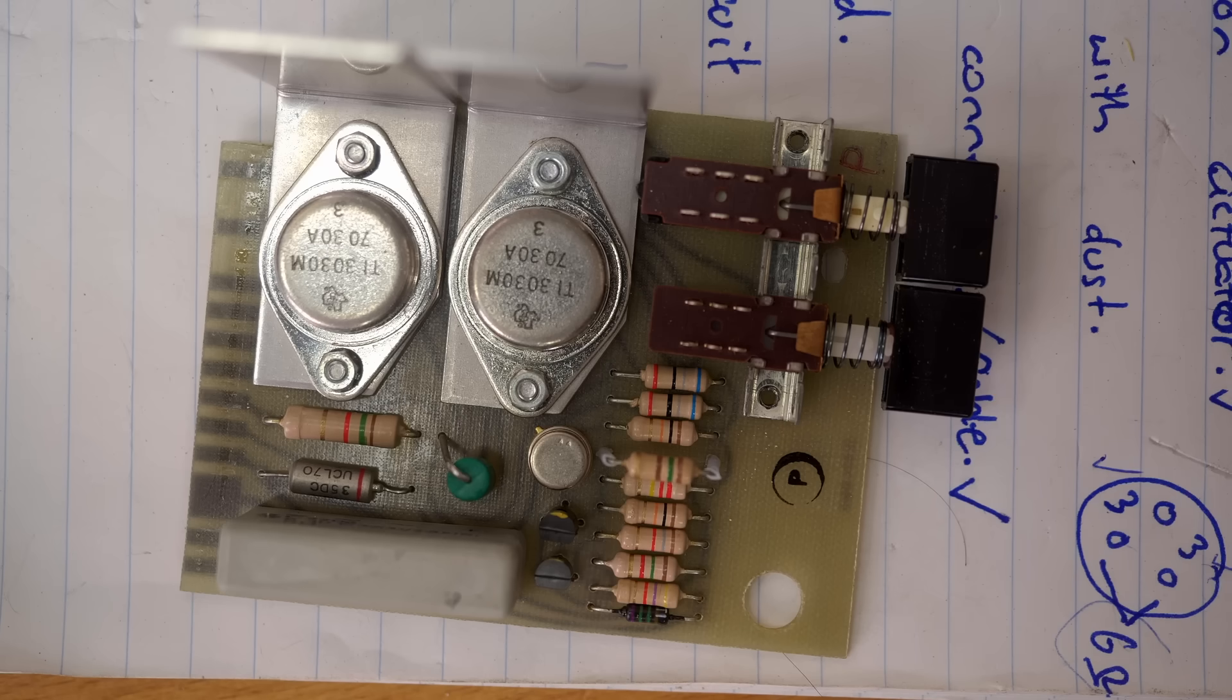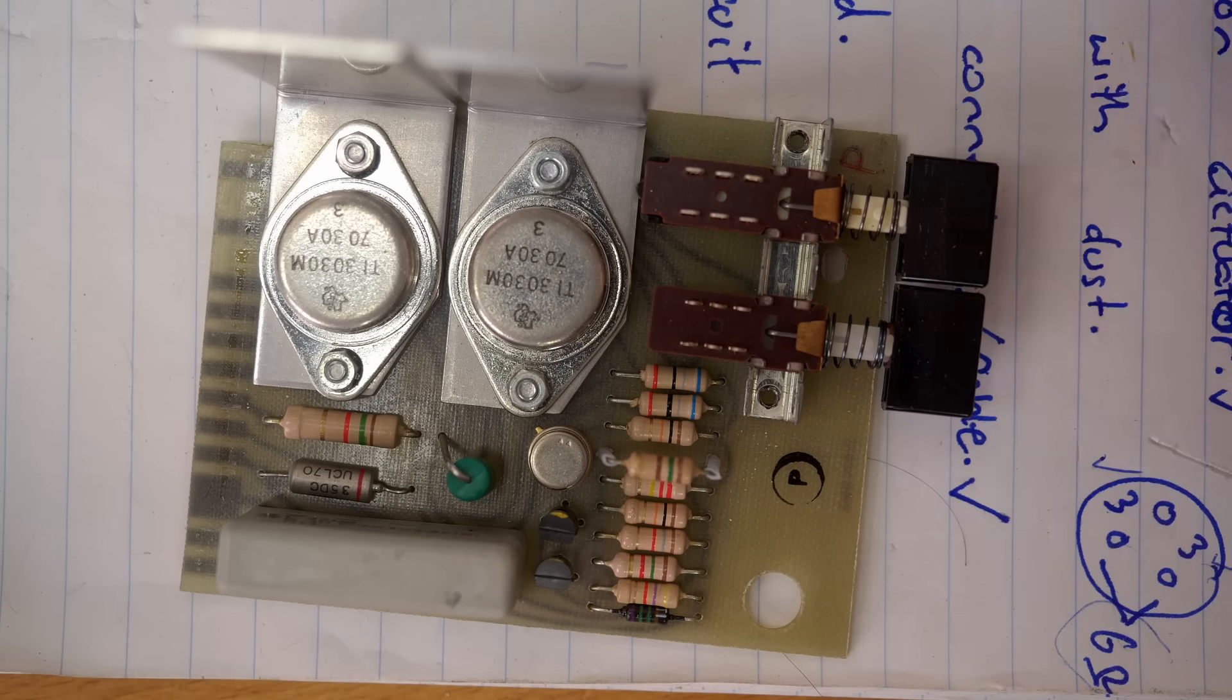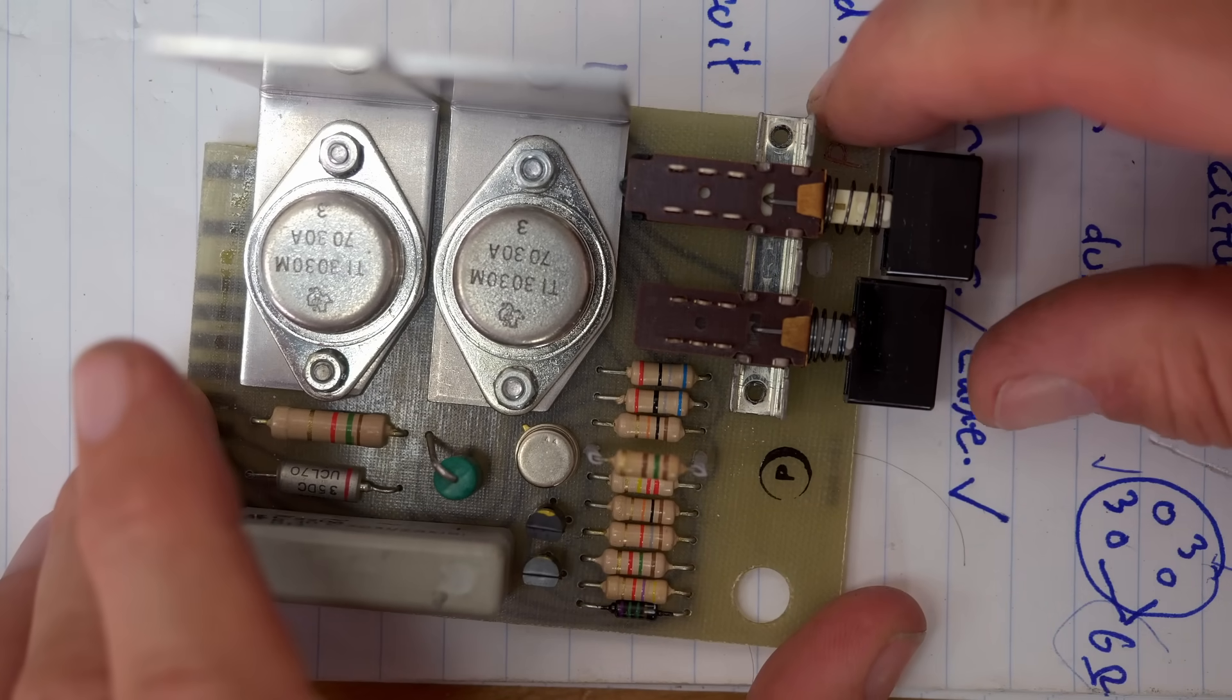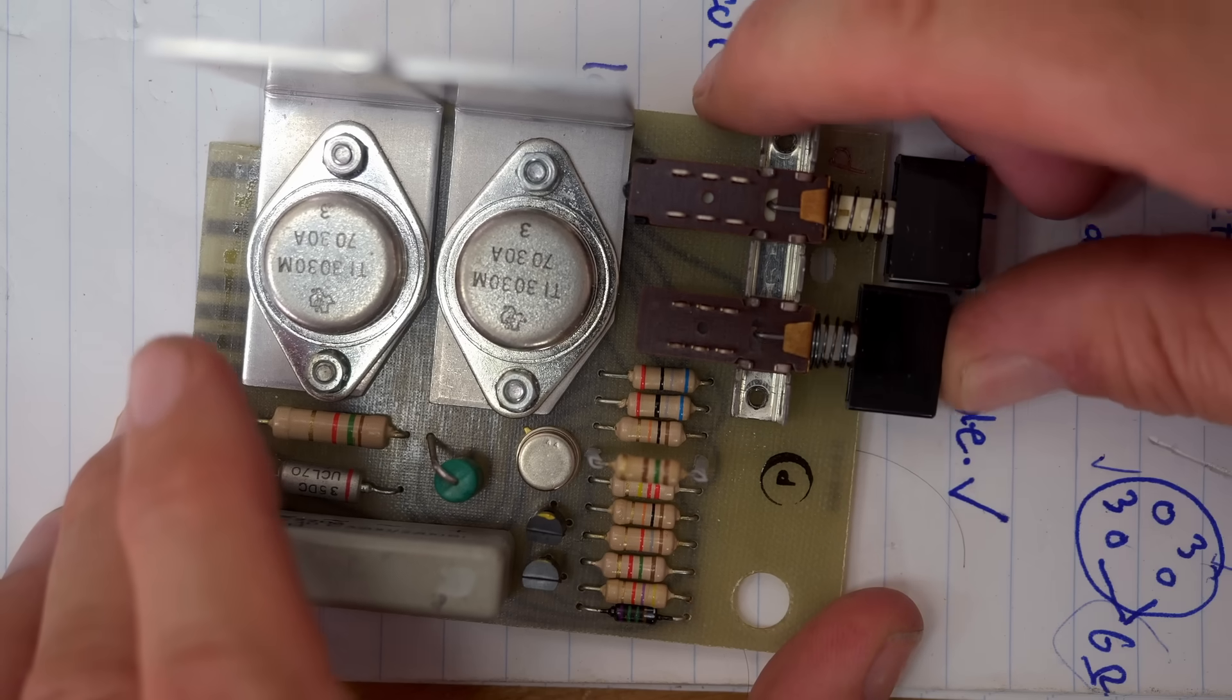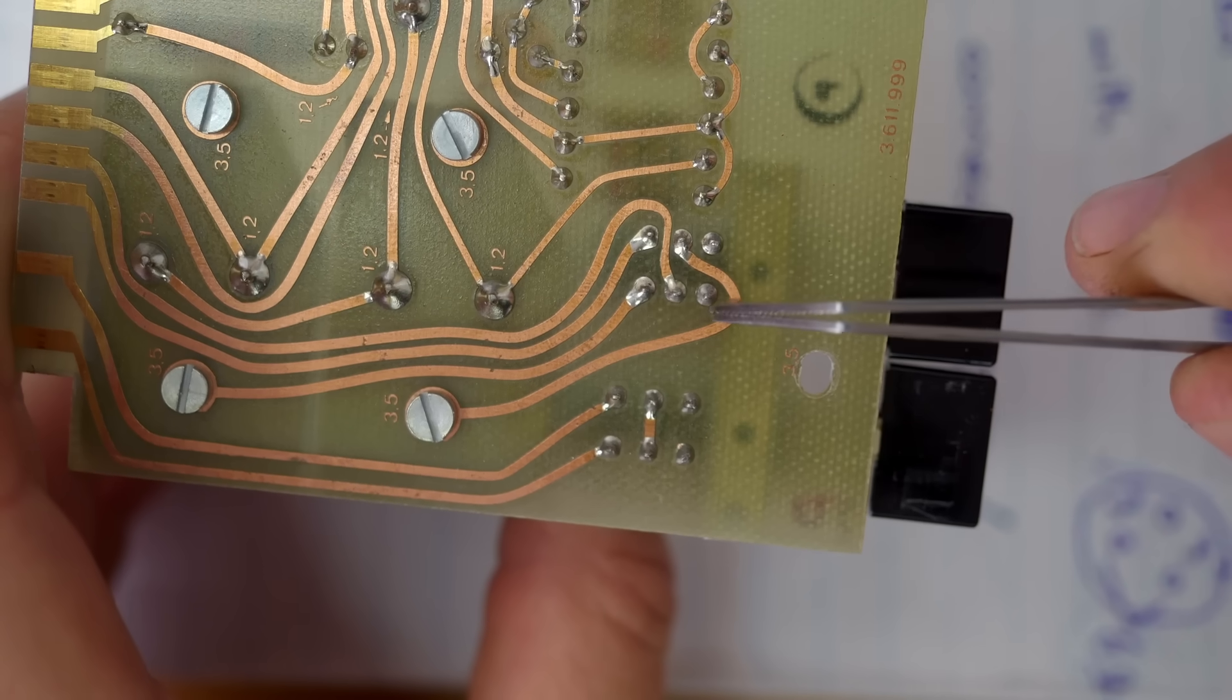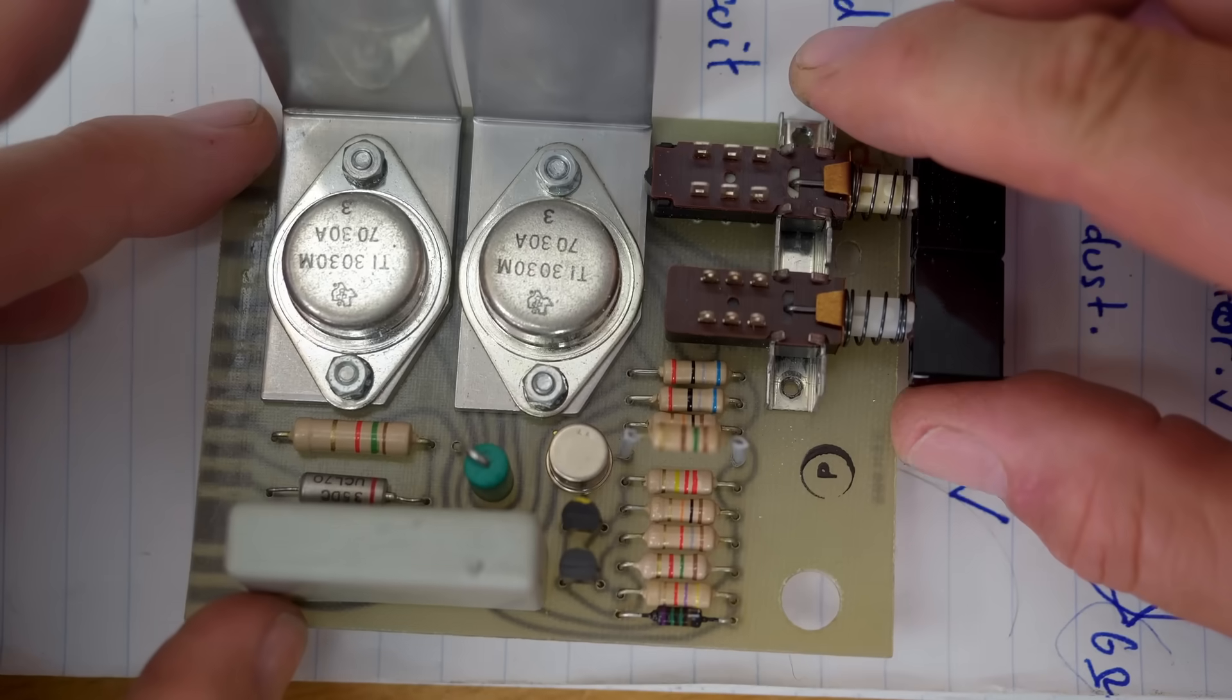So here we can see that circuit board. I'm going to guess these are the output drivers. This is the switch that should select the actuator on off. I guess I can test that and see whether it's switching. Looks like it's got three pairs of poles but only two of them are in use. Those two. But I still don't see a use for that extra screw.